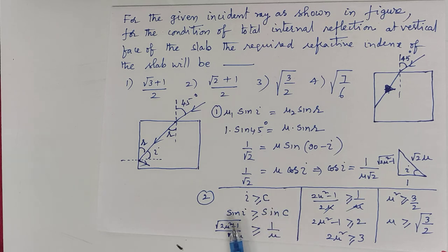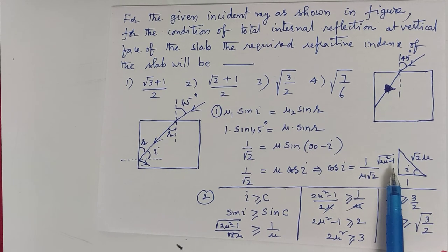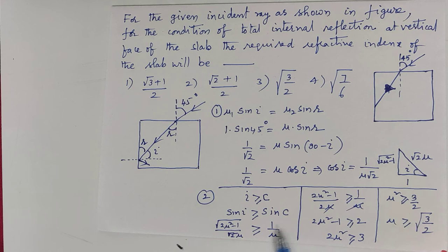Take sin on both sides. sin i must be greater than or equal to sin c. From this right angle triangle, sin i is √(2μ² - 1)/√(2μ), greater than or equal to sin c which equals 1/μ.